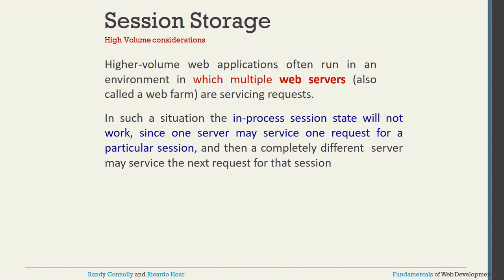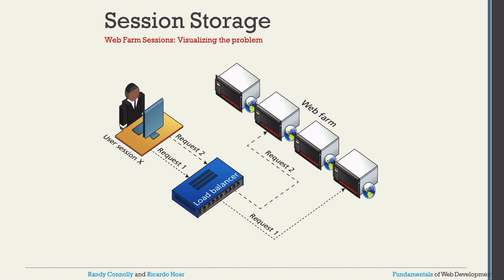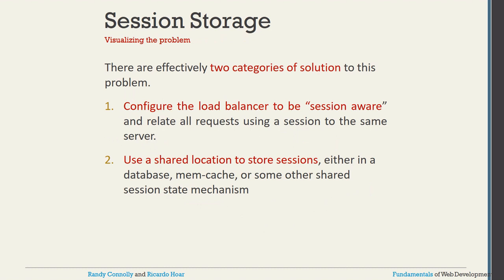When a different server services the next request for the same session, problems arise. For example, user X has request 1 going to one server and request 2 going to a different server. There are two categories of solutions: first, configure load balancing to be session-aware and route all requests for a session to the same server; second, use a shared location to store sessions — either in a database, a memory cache, or some other shared state mechanism.